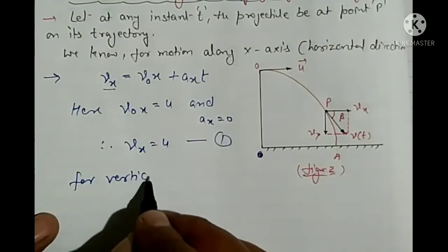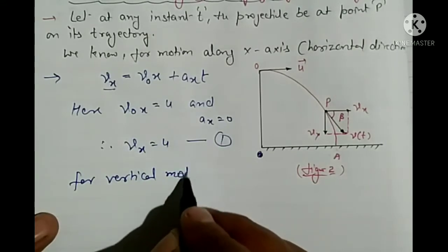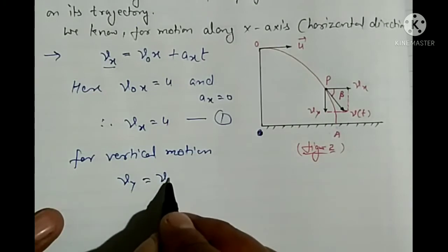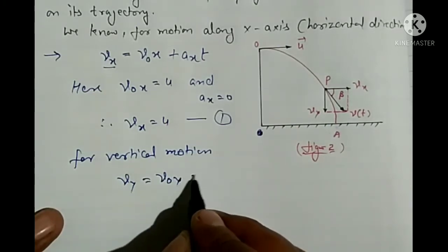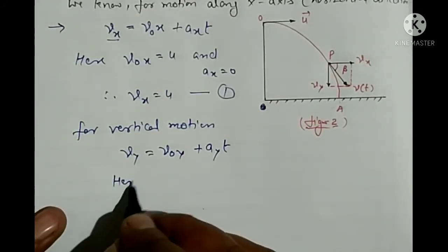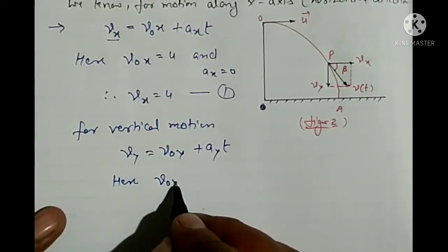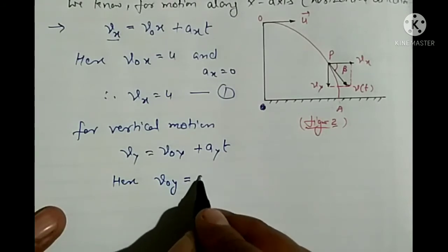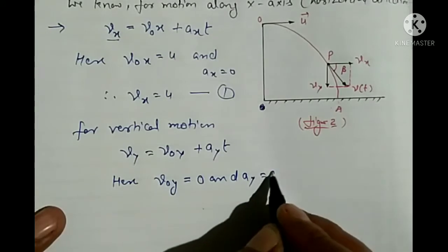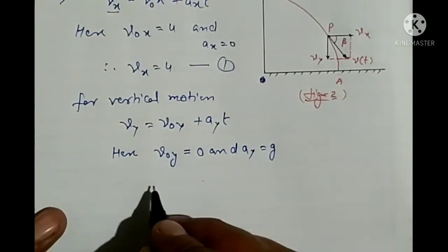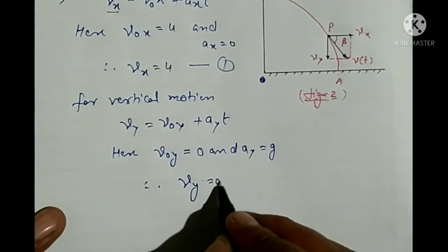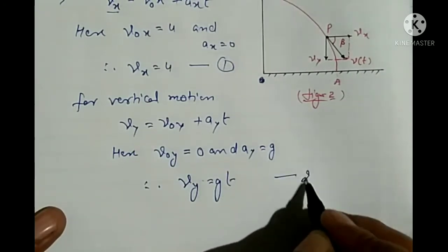For vertical motion: Vy = V₀ᵧ + aᵧt. Since V₀ᵧ = 0 and aᵧ = g, we get Vy = gt — this is equation number 2.